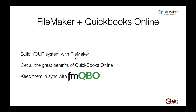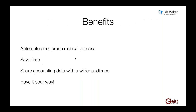So let's just wrap up a little bit about FileMaker and QuickBooks. Custom software is a right — build your system and use FileMaker to do it; it's a great platform for building custom software. If you integrate with QuickBooks Online, you get all the great benefits of QuickBooks Online — it does a great job of ingesting bank feeds so reconciliation is super simple, it has the ability to send invoices and get payments, and it's got a ton of really great features. Keep them in sync with FMQBO. When you do that, you get to automate error-prone manual processes, save a bunch of time, share accounting data with a wider audience, and most importantly, you get to have it your way — it's your system, your workflow, your software.